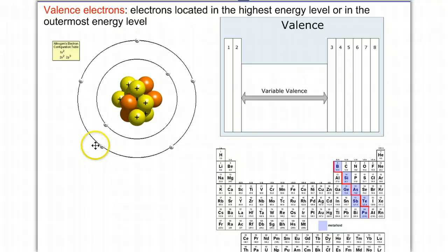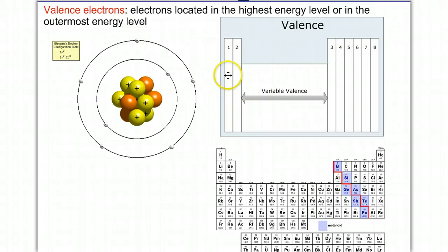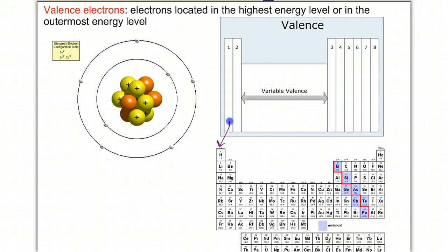If nitrogen were to gain three more electrons, it would achieve a full octet. The valence pattern on the periodic table corresponds as follows: group one has one valence electron — this corresponds to the alkali metals, where every element in that group has one valence. The elements in the second column all have two valence electrons. We cannot determine the number of valence electrons for transition metals because it varies.